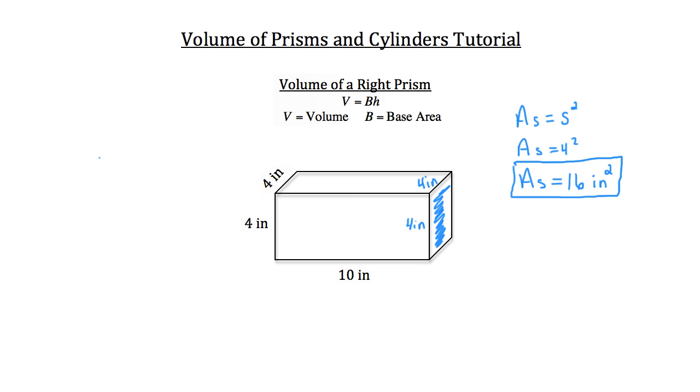So the volume of this prism is equal to the base area, which is 16 square inches, times the height, which is 10 inches. So this right prism has a total volume of 160 cubic inches.